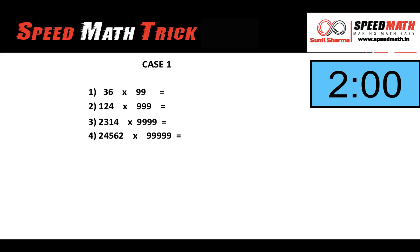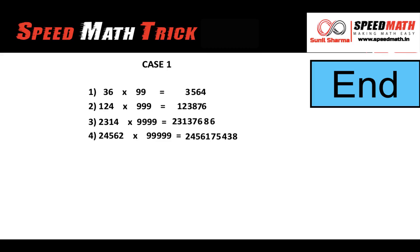I hope you've understood. Please pause the video for two minutes and solve the questions visible on the screen, then check the answers. Welcome back — here are the answers to all four questions. That was Case 1, where the number of nines is exactly equal to the number of digits in the other number.